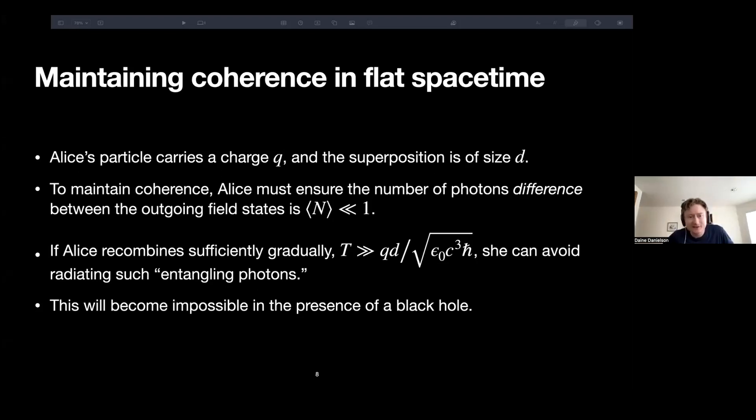So just a little bit more quantitatively, if Alice's particle carries a charge Q, and the superposition she made is of a size D, then to maintain coherence, it would be sufficient to make sure that the two different radiation states, psi-1 and psi-2, differ by much less than one photon. So the difference between the two outgoing states is very small in photon number. And if Alice recombines sufficiently gradually, that is, if the time over which she performs the experiment is much, much larger than the dipole moment of her superposition, kind of the effective dipole of her superposition, it turns out that's the condition that would be sufficient so that she avoids radiating even one such entangling photon.